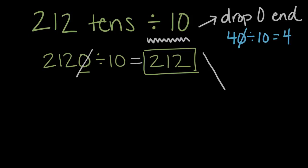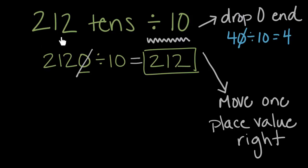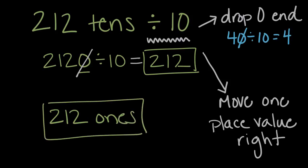But we could also use the place value pattern. Instead of moving one place value to the left — one place value larger — we're going to move one place value smaller, or to the right. So what's one place value smaller than two hundred twelve tens? If we have two hundred twelve tens divided by ten, we want to move this tens one place value to the right, which is ones. So our solution would be two hundred twelve ones, which is equal to simply 212. So two hundred twelve tens divided by ten: we could write the number out and drop a zero, or think about place value and move one place value to the right. Either way, our answer is two hundred twelve ones, or 212.